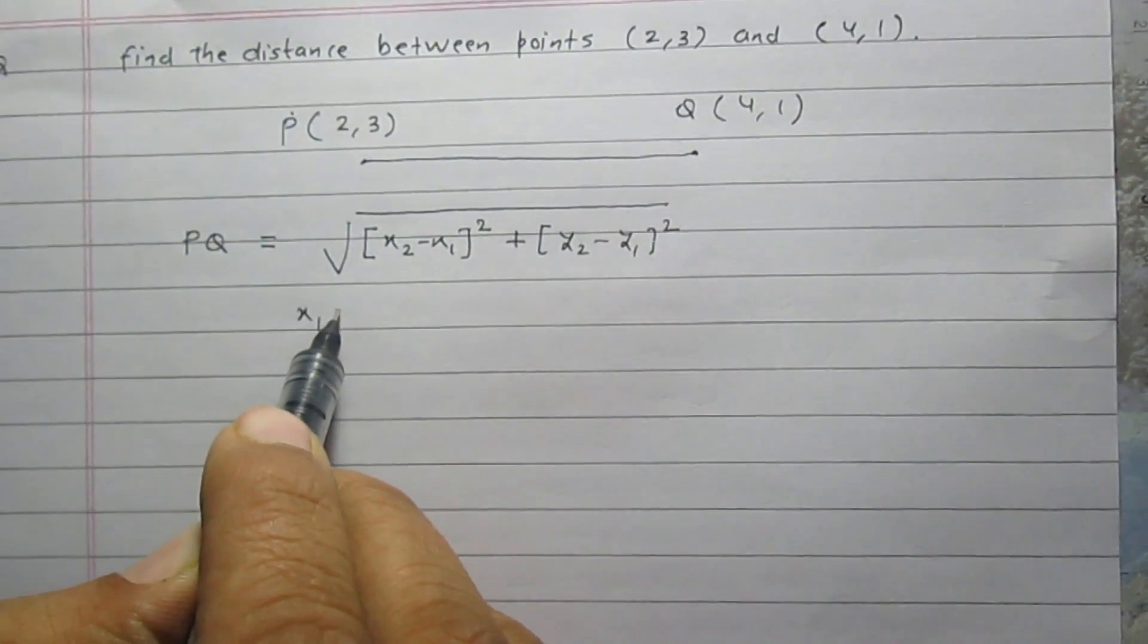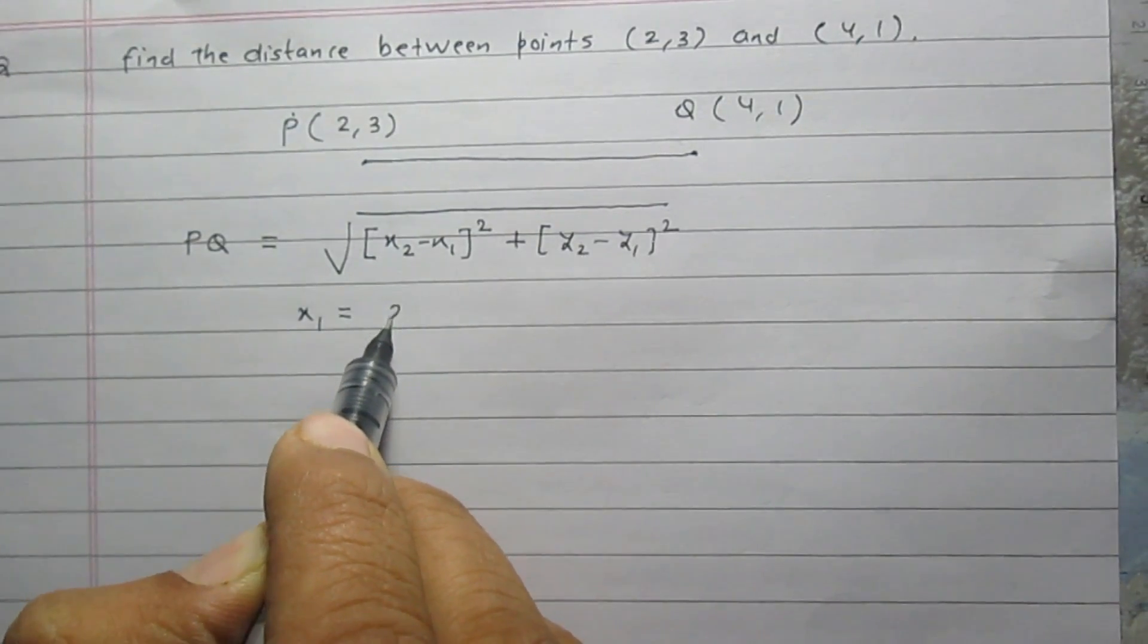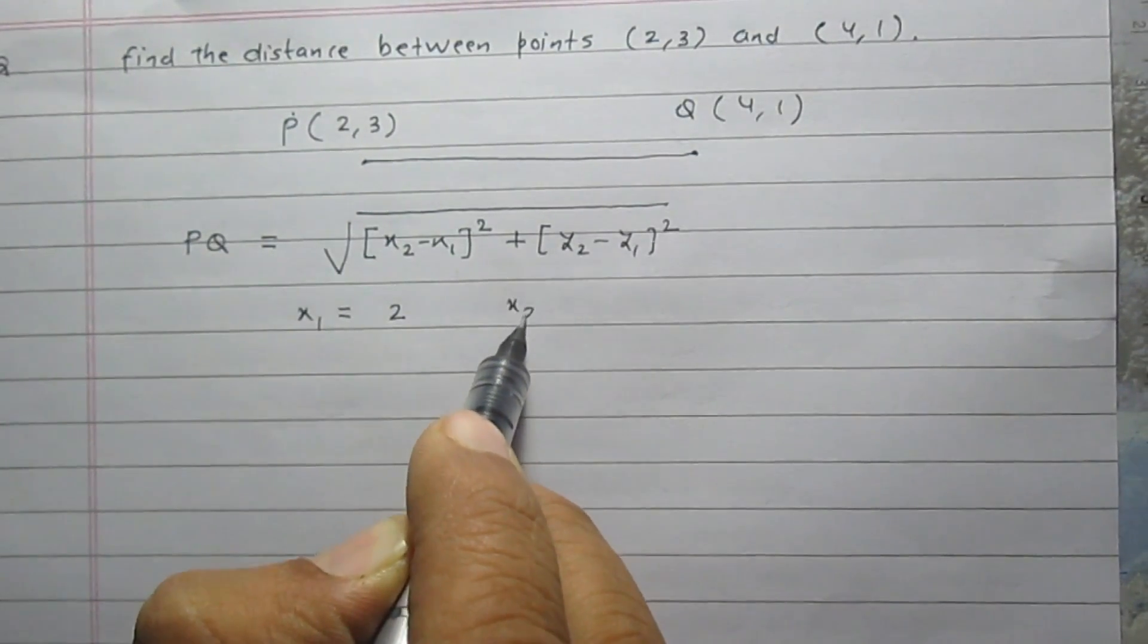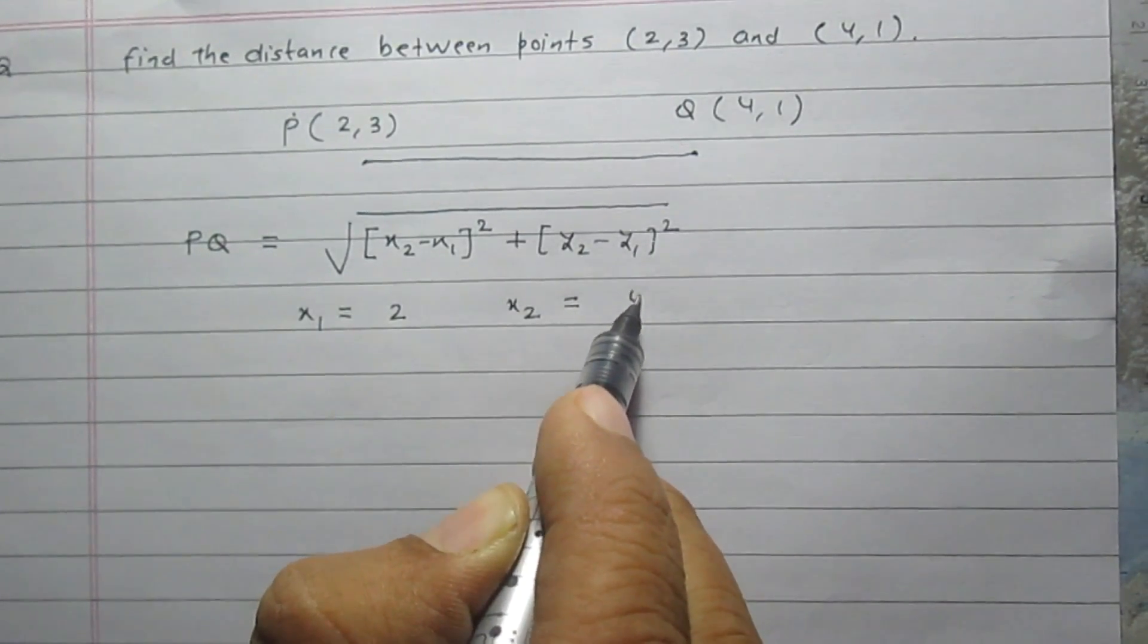Here x1 stands for the x-coordinate of first point P, which is 2. x2 stands for the x-coordinate of second point Q, which is 4.